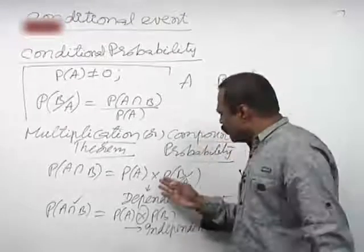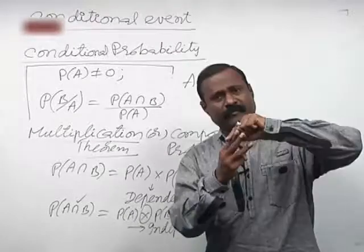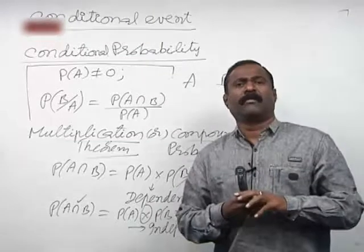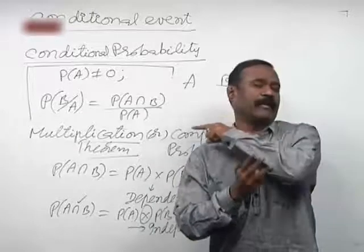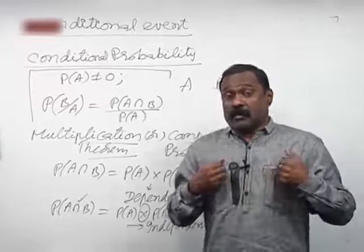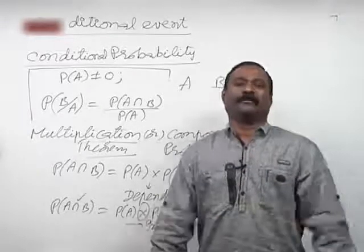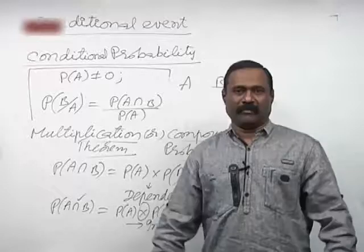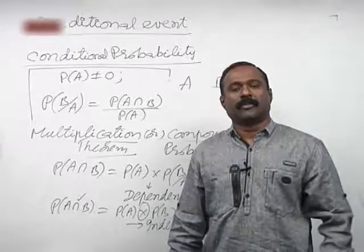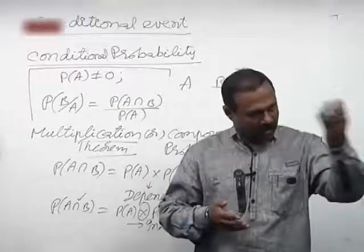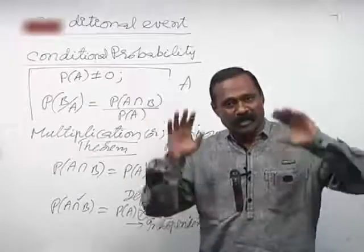You might wonder how to tell if events are dependent or independent when solving problems. Consider three students whose capabilities of solving a problem are 1/3, 1/4, and 1/5. Intelligence is independent — my intelligence does not depend on another student's intelligence. Unless you copy from others, your intelligence is always independent.